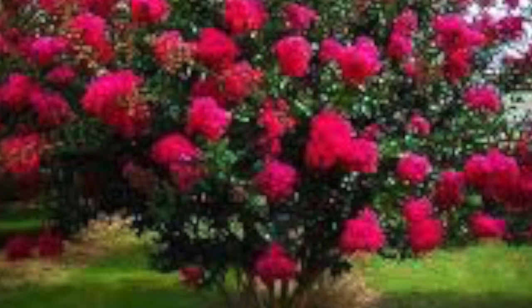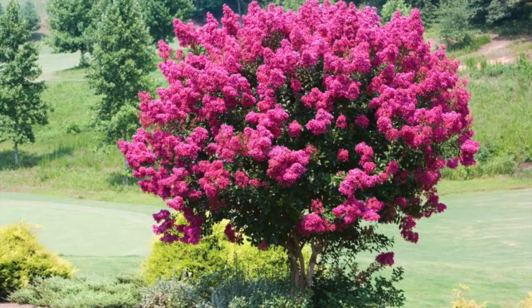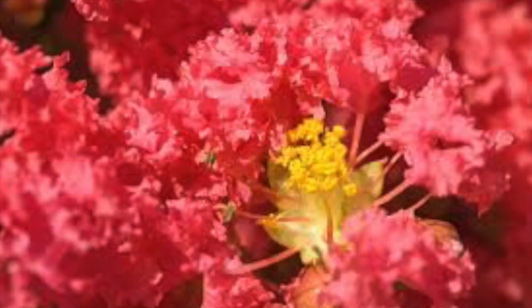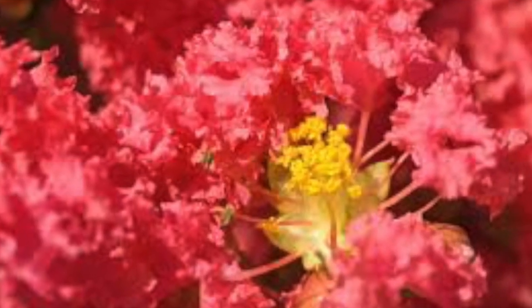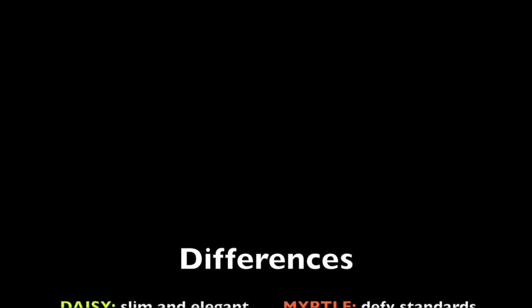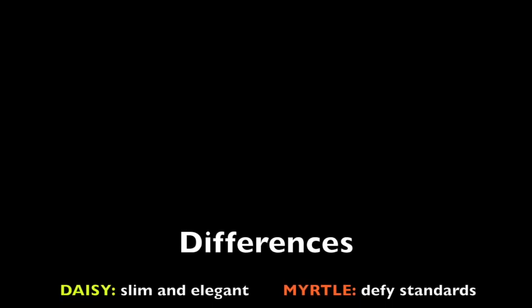For example, the crepe myrtle tree is not the same as a myrtle flower. Although they have similar names and look similar, they are two different plants. Now let's explore the differences between Daisy and Myrtle.